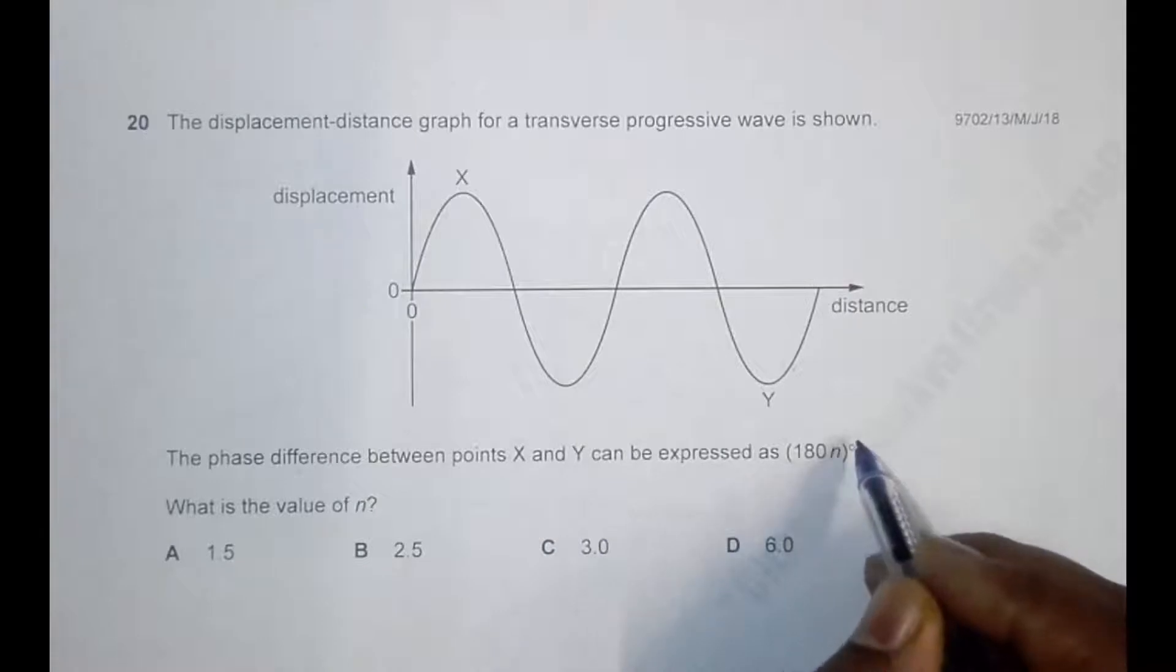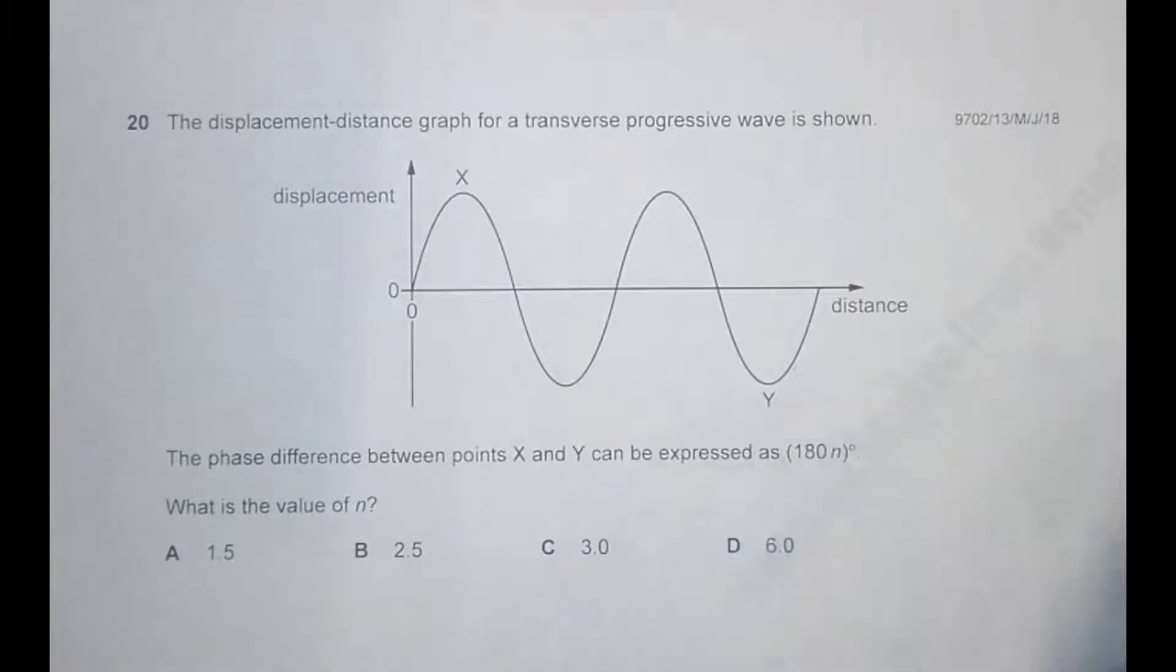180n degrees. So we have to find what's the value of n. Let's remember that the phase difference or phase angle of any wave can either be expressed in terms of degrees or in terms of radians. When in terms of radians, we often use it in terms of pi.